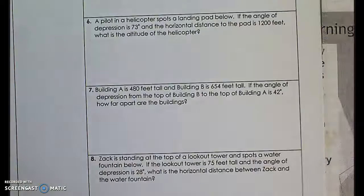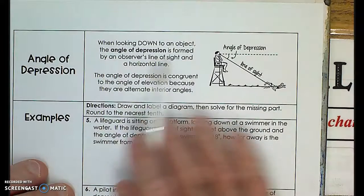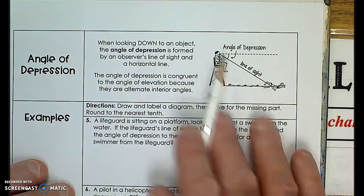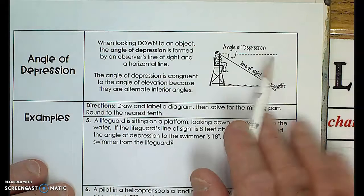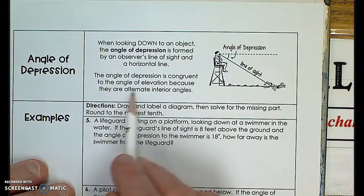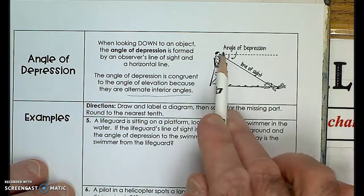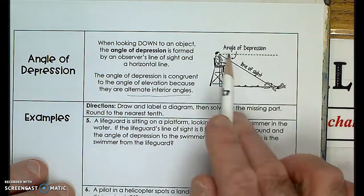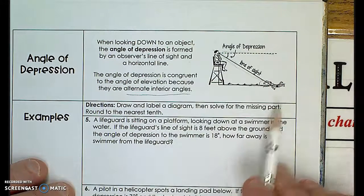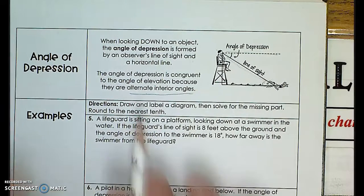Now let's look at the angle of depression. When looking down at an object, the angle of depression is formed by the observer's line of sight and a horizontal line — similar to the angle of elevation, but now we're looking down. This is your line of sight, this is the horizontal line, and this is your angle of depression. The angle of depression is congruent to the angle of elevation because they are alternate interior angles. The two horizontal lines are parallel, and the line of sight is a transversal, so these angles are congruent — they are the same.